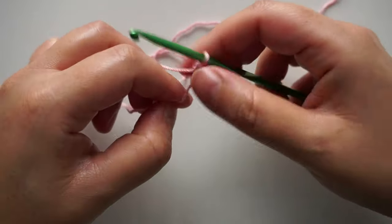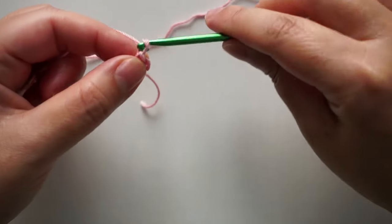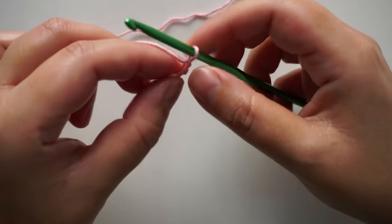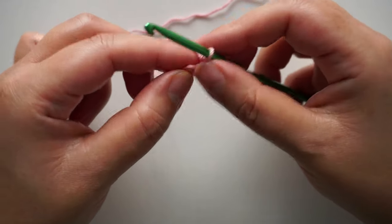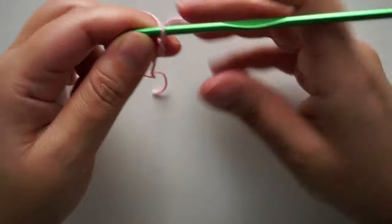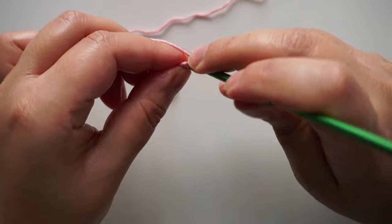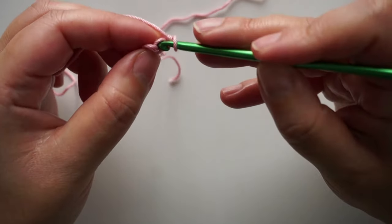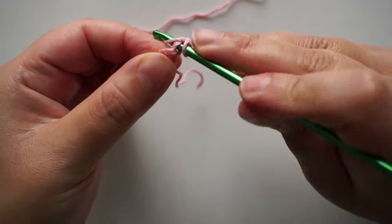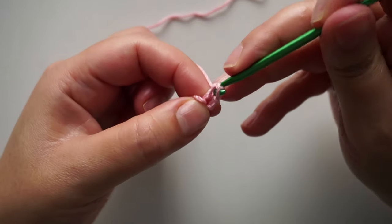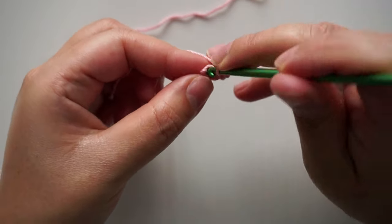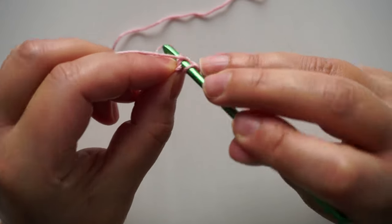I will tighten my thread and then I'll chain one and turn. Now I have two stitches. I'm gonna do one single crochet in the first stitch. I'll chain one and two single crochet in the second stitch.